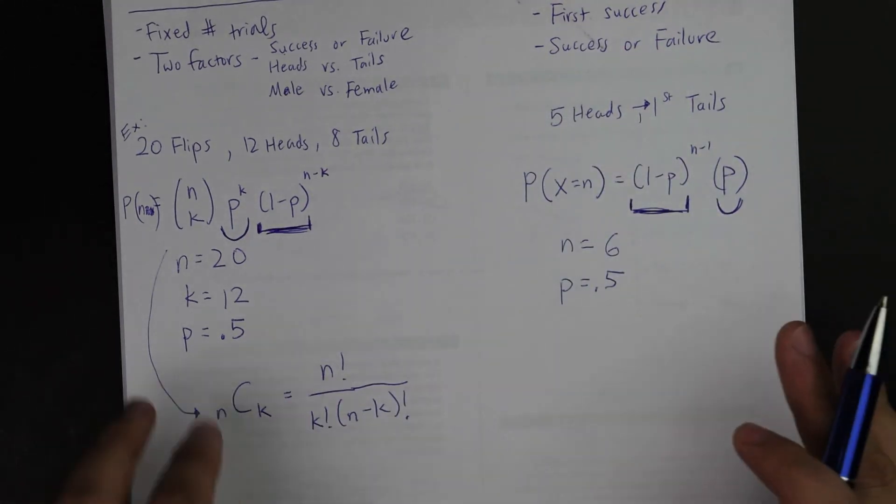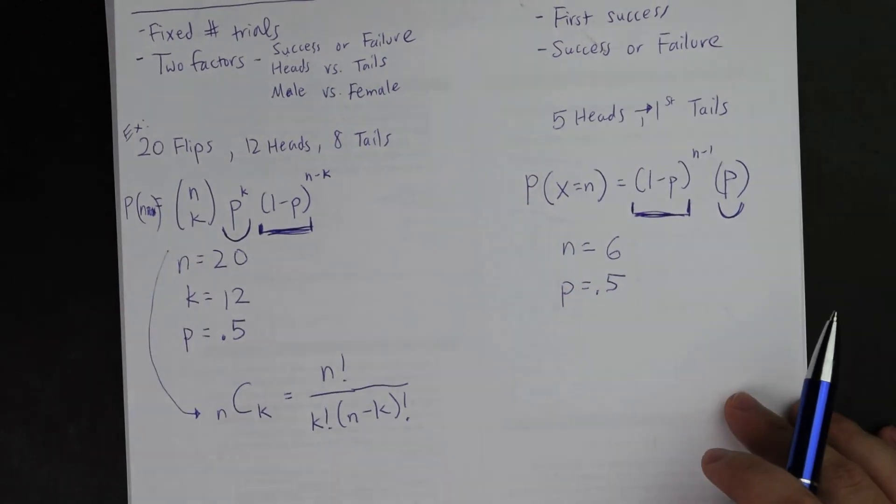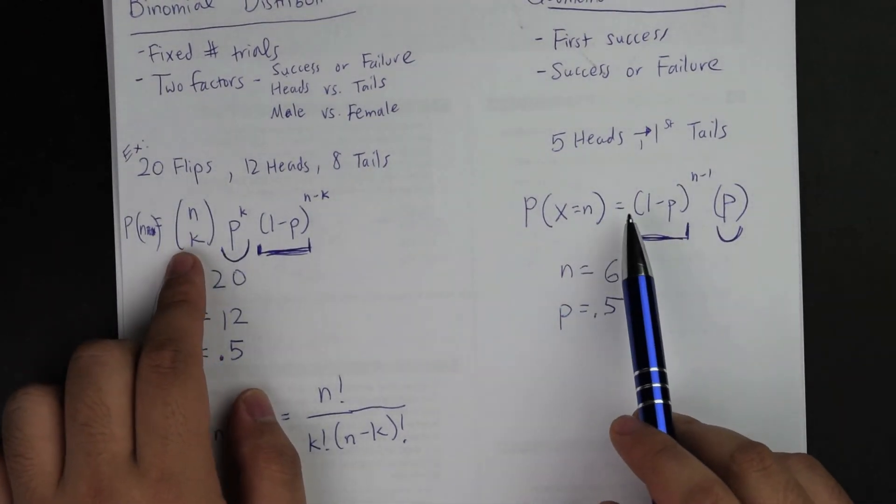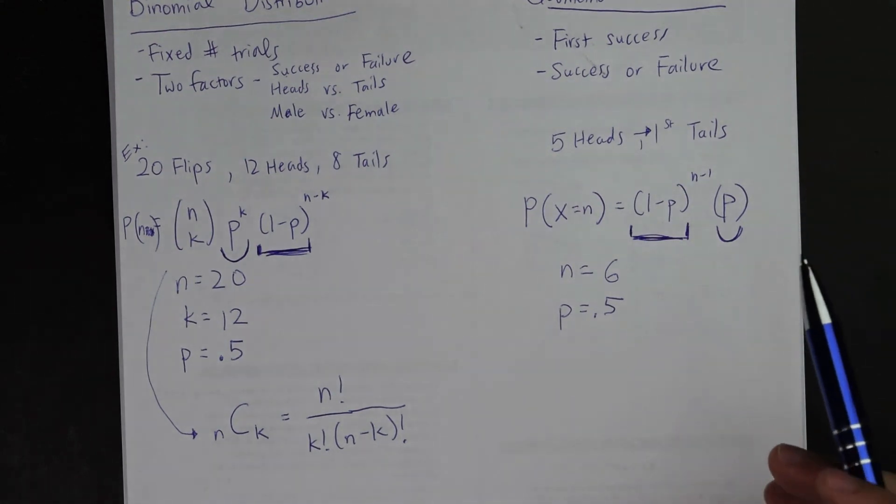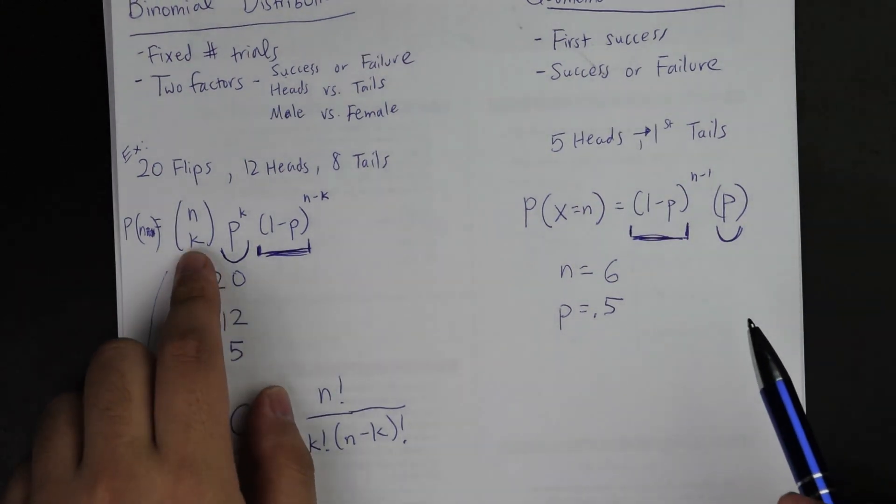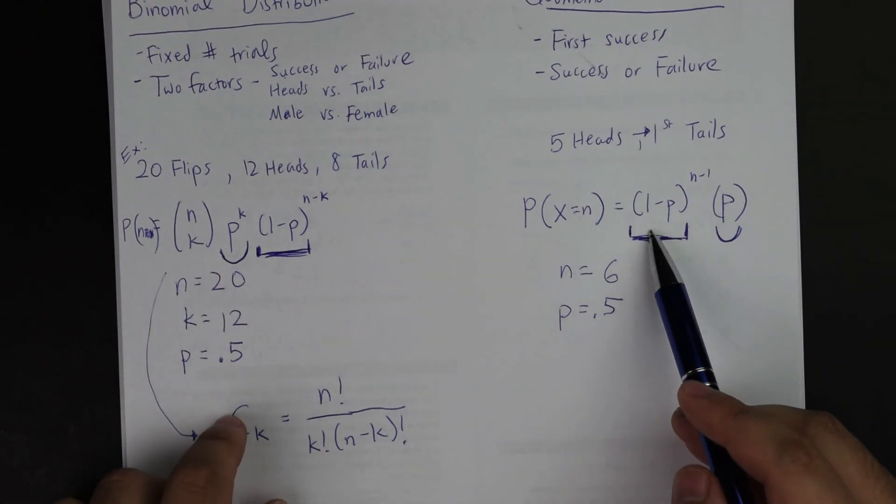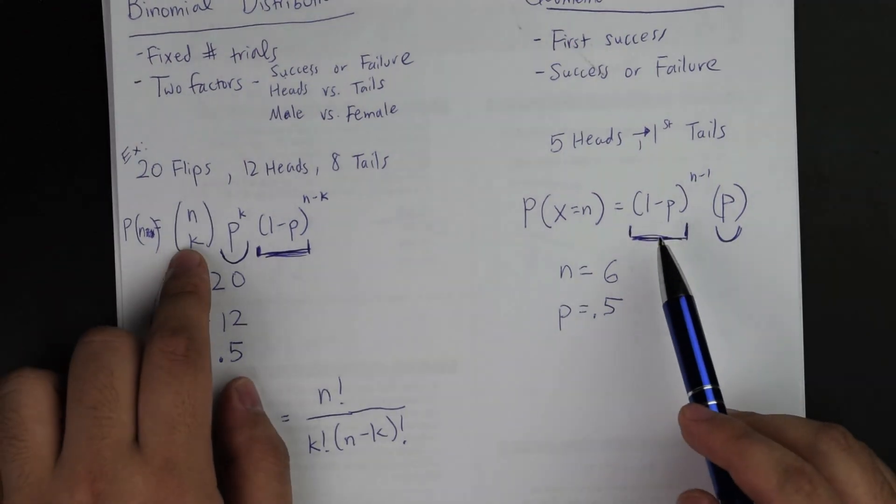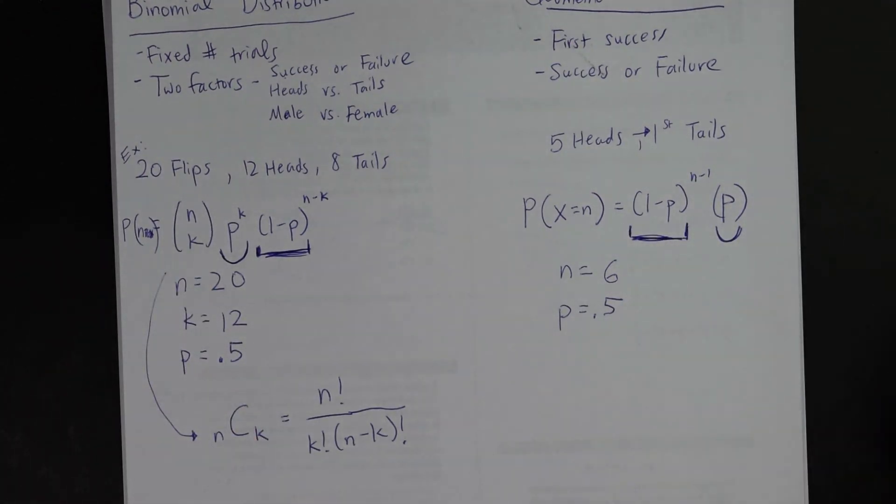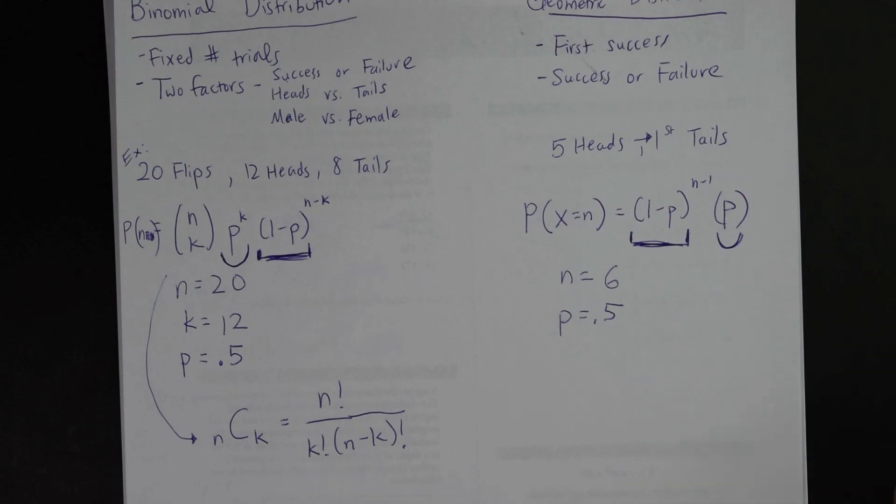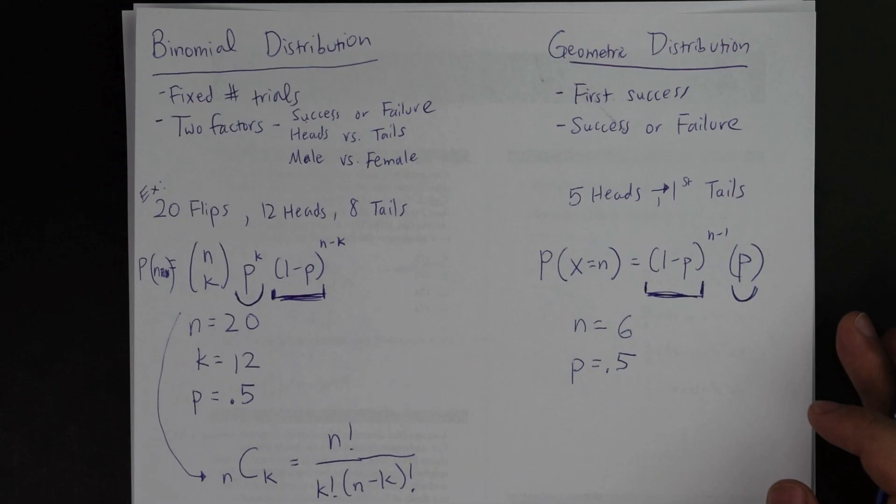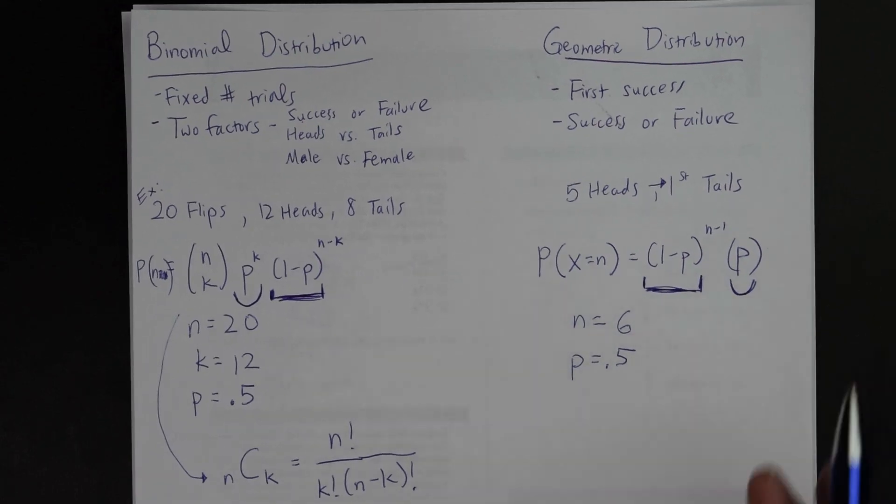But as a side note, as I was mentioning, this nCk part right here is not going to be involved in your geometric distribution. So if you could just remember, side note, that binomial distribution is a little bit more complicated than the geometric distribution equation, that it does not have this, then you should be good to go. You don't need to necessarily memorize it. That will just be your guidance to remember how to solve out for geometric distribution without having to completely memorize both binomial and geometric distribution equations.